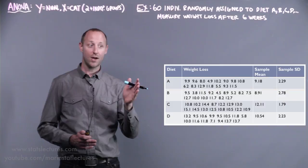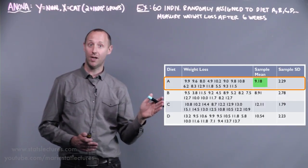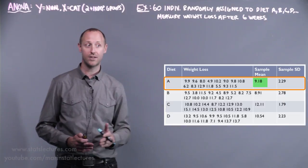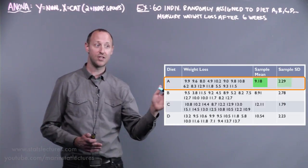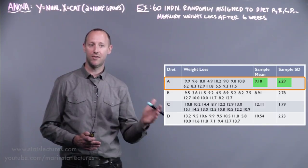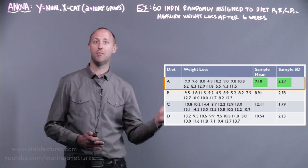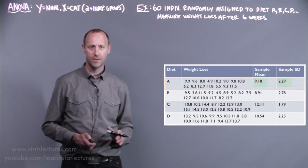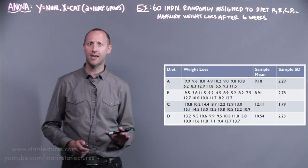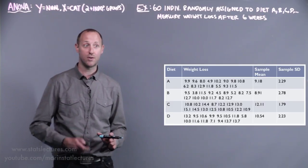We can see all the observations for group A here. They have a sample mean of 9.18 pounds lost on average and a sample standard deviation of 2.29. On average, an individual within diet A moved about 2.29 pounds from the mean of 9.18. We're going to work with simple data to focus on the concepts and not get overwhelmed with an extremely large data set.